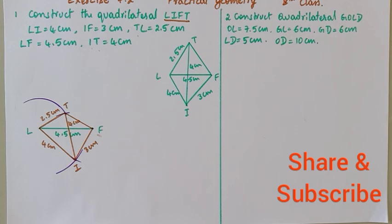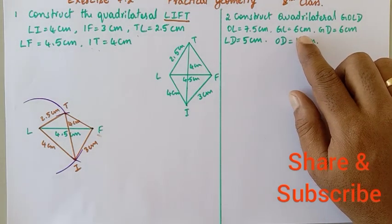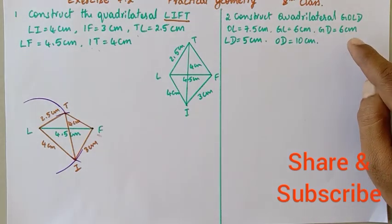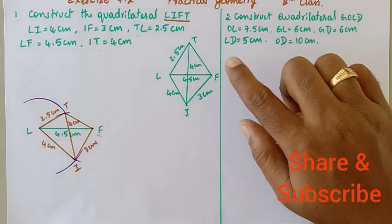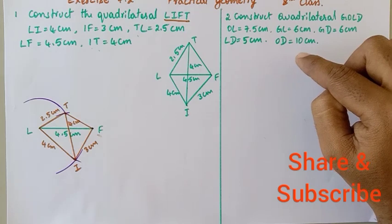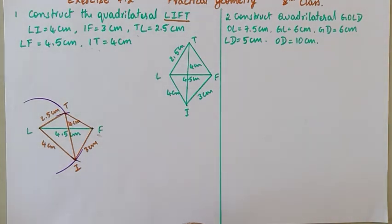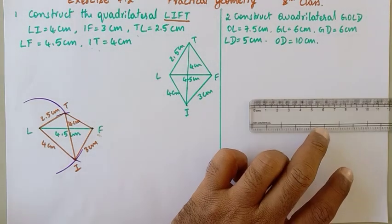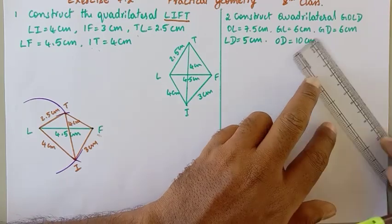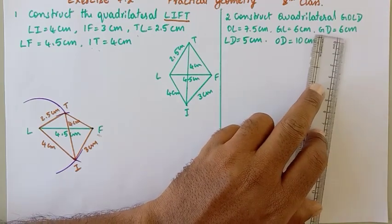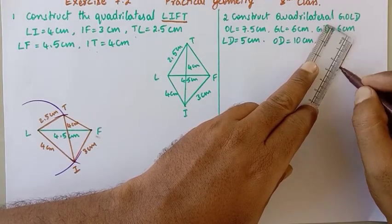Construct quadrilateral GOLD, where OL is equal to 7.5 cm, GL is equal to 6 cm, GD is equal to 6 cm, LD is equal to 5 cm, OD is equal to 10 cm. The easiest way of constructing it is to first prepare a rough diagram.